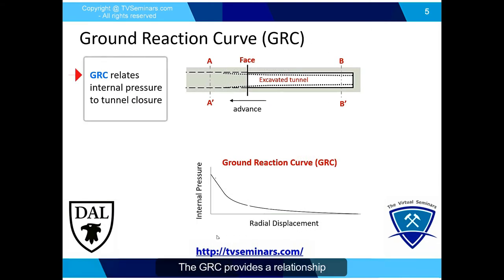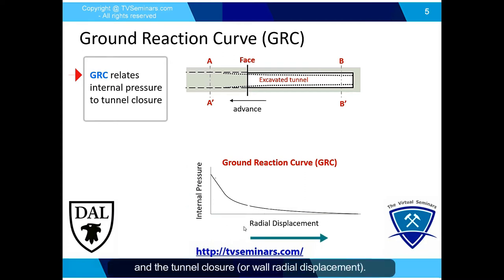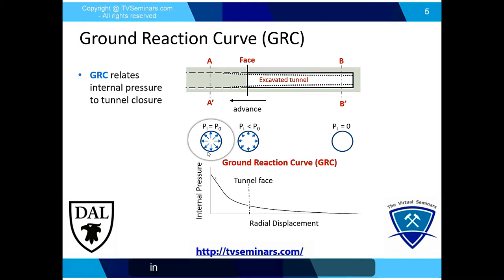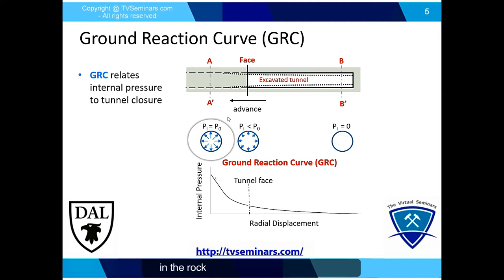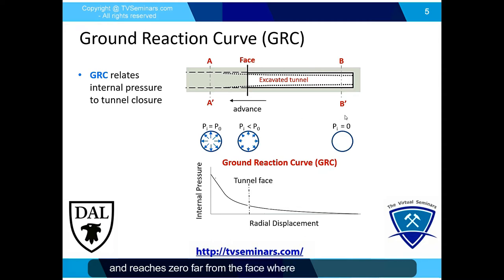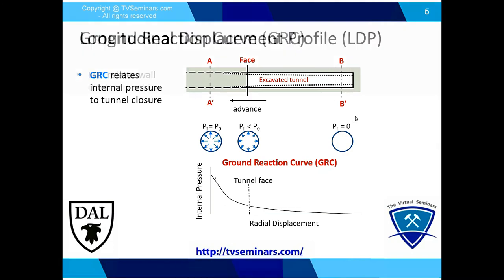The GRC provides a relationship between internal pressure and tunnel closure or wall radial displacement. Internal pressure is a pressure applied to the boundary of the excavation in the opposite direction to the in-situ stresses. It is equal to the in-situ stress ahead of the face at cross-section AA' and gradually decreases at the face, reaching zero far from the face where there is no face effect at cross-section BB'.